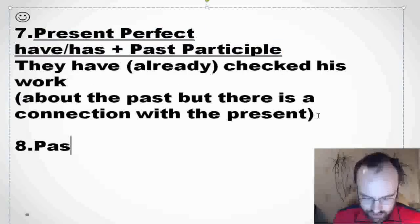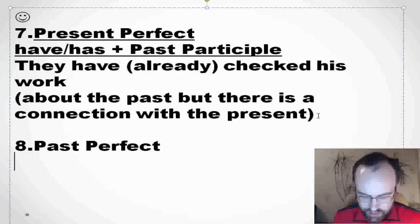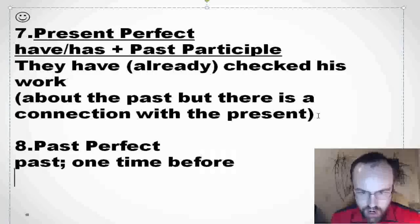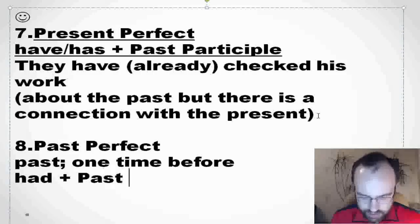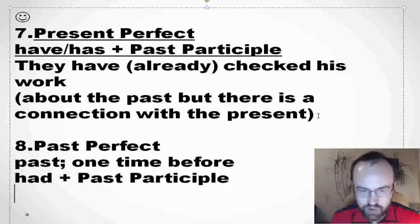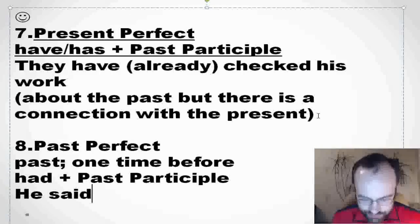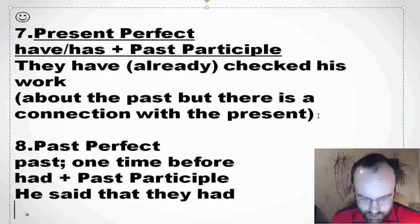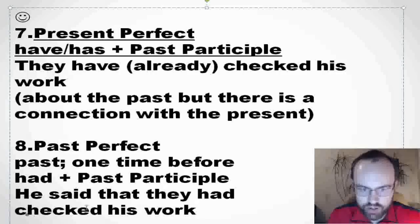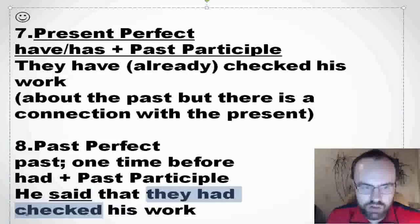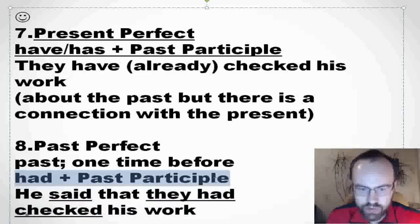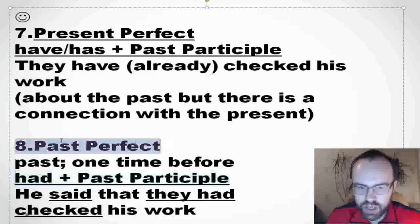Past perfect — it's about the past, but one time before. We form it with had plus past participle. For example: he said that they had checked his work. 'He said' is about the past, but 'had checked' happened even earlier. You say had plus past participle — 'checked' is the past participle. Okay, past perfect.